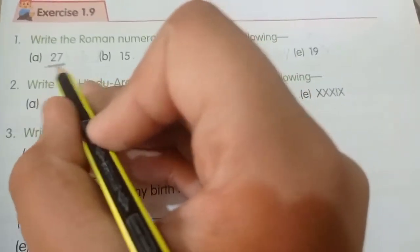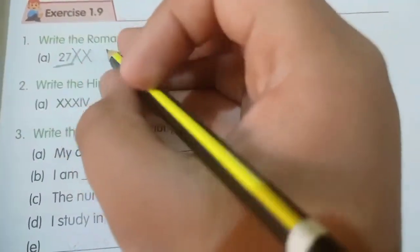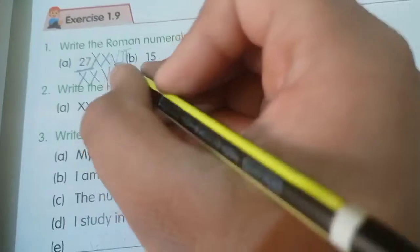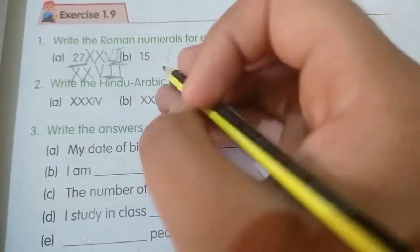27. For 27, what is the Roman numeral? How much is it? The first one is X and then X, then it will be V and then I, I. This is the Roman numeral for 27: XXVII. 15. For 15, what is it? XV.